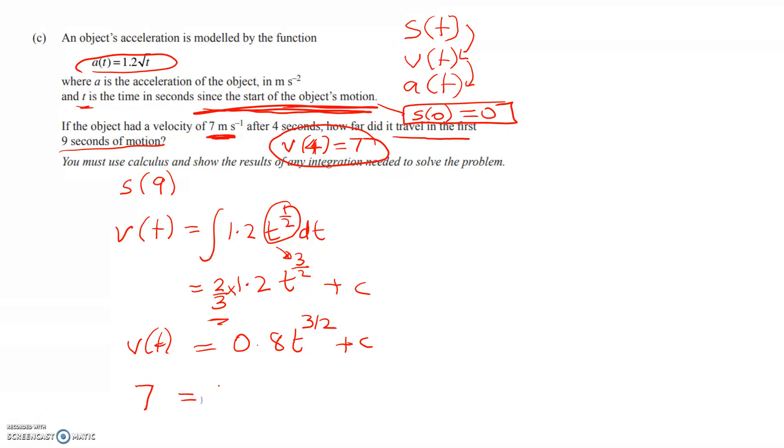Well, I've got v of 4 is equal to 7. So substituting in, I get 7 is equal to 0.8 times 4 to the power of 3 over 2 plus c. So when we work that through, we get 7 is equal to, so this is 8, so 6.4 here plus c, c is equal to 0.6. So that gives me now a nice expression for velocity. v of t is equal to 0.8 t to the 3 over 2 plus 0.6.